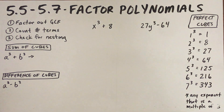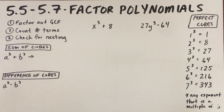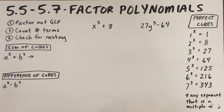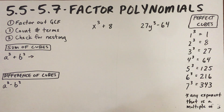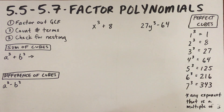All right class, welcome back. This is going to be our factoring video on sum of cubes and difference of cubes. A couple of things — these are the instructions for these questions. We'll say factor completely, and our process for doing that will be: first, factor out a GCF if there is one; second, count the number of terms to determine which method to use; and third, check for nesting. We haven't really talked about nesting yet, but we will.